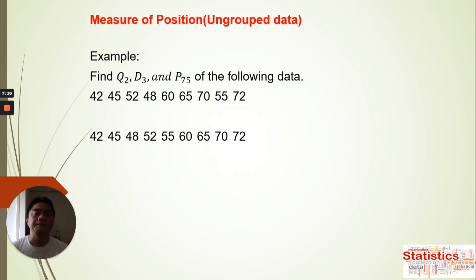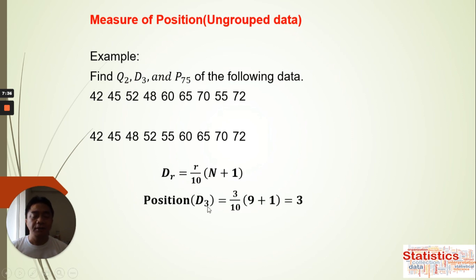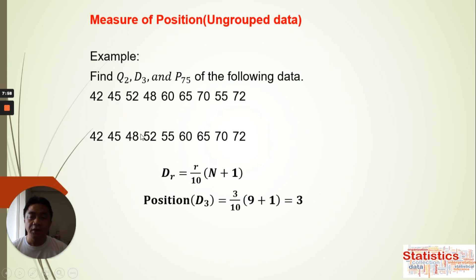Next we find D3. Using the arranged data and the decile formula: Dr = (r/10) × (n + 1), with r = 3 and n = 9. Substituting: D3 = (3/10) × (9 + 1) = (3/10) × 10 = 3. Therefore, D3 is at position 3. Counting in the arranged data: 1, 2, 3 — D3 = 48.